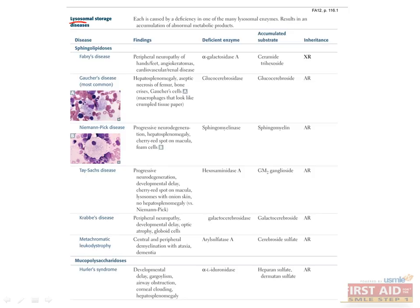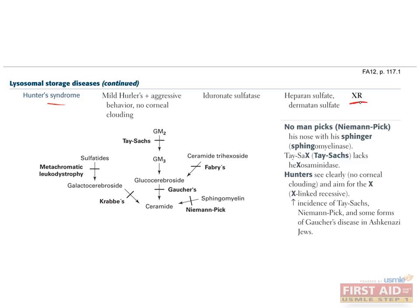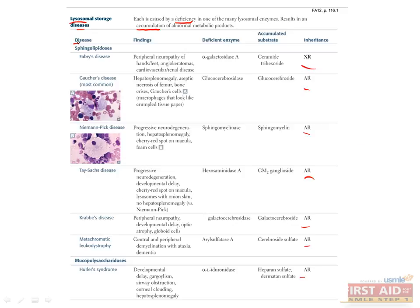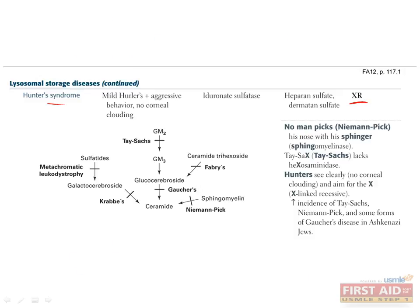Lysosomes are organelles whose main function is to break down unwanted molecules using a variety of enzymes. The deficiency of one of these enzymes can cause a lysosomal storage disease, which results in the accumulation of a sphingolipid or mucopolysaccharide in certain cell types. These diseases mostly affect children and are often deadly at a young age. They're all autosomal recessive, except for Fabry's disease and Hunter's syndrome, which are both X-linked recessive. You'll likely get a question on your Step 1 asking you to identify the specific disease, deficient enzyme, accumulated substrate, or clinical findings from one of these lysosomal storage disorders.